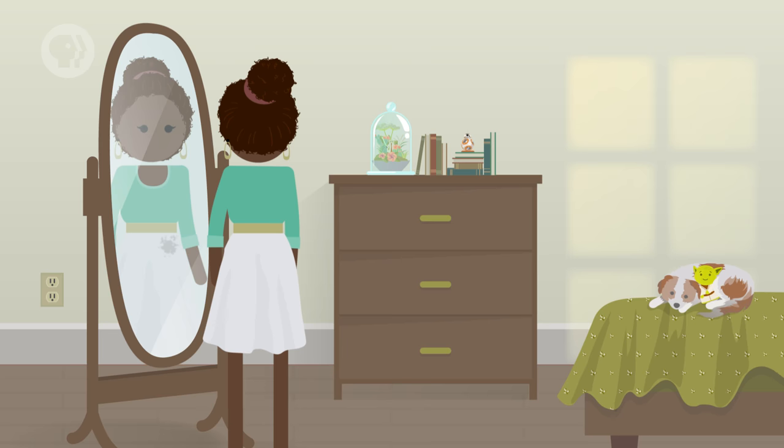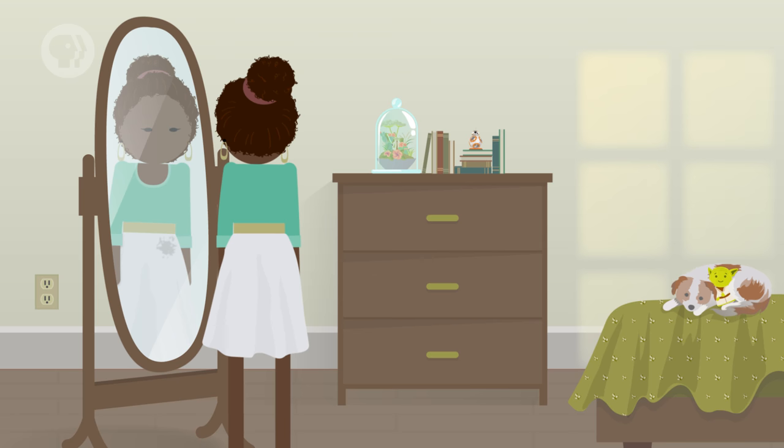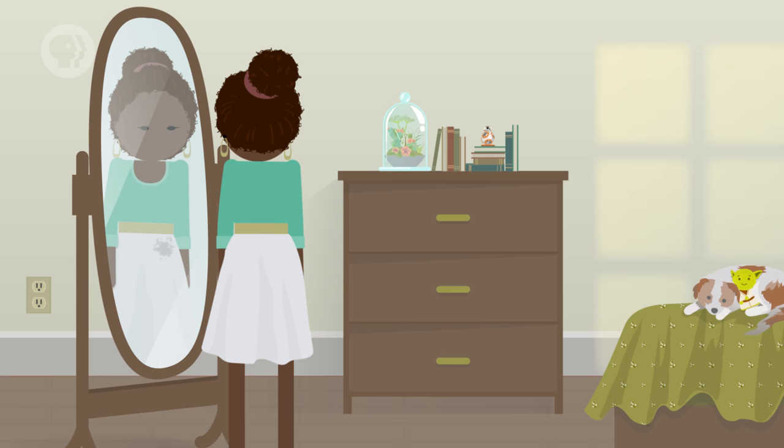When you look in the mirror, for example, it looks like you're standing on the other side of the mirror. But you aren't. You're seeing a virtual image, because the light rays that make up your reflection aren't actually converging to form an image of you.